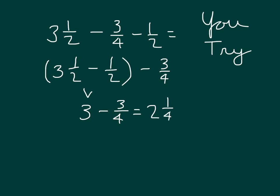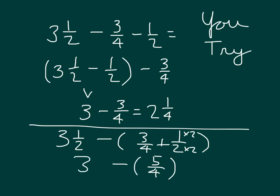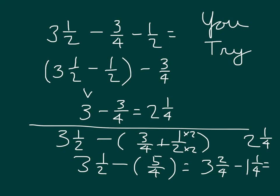The other way to solve this is to start with 3 and 1 half and subtract the sum of 3 fourths and 1 half. Multiplying by 2 over 2: 1 times 2 is 2, 2 times 2 is 4 — so that's 3 fourths plus 2 fourths, which is 5 fourths. So we are subtracting 3 and 1 half minus 5 fourths. 5 fourths equals 1 and 1 fourth. So we have 3 and 2 fourths minus 1 and 1 fourth, which equals 2 and 1 fourth. 2 fourths minus 1 fourth is 1 fourth, and 3 minus 1 is 2. There are multiple ways to solve that problem.